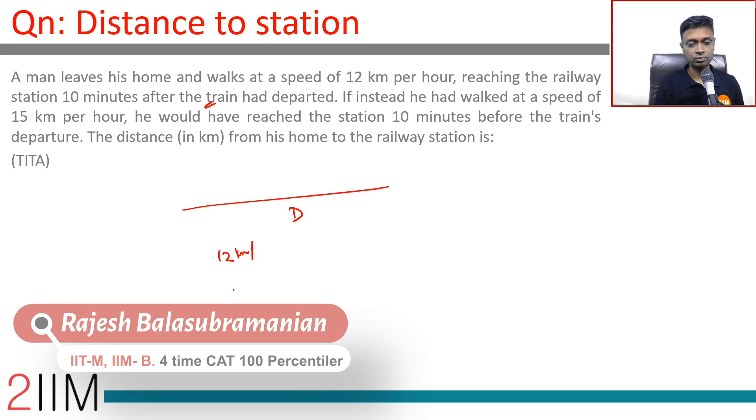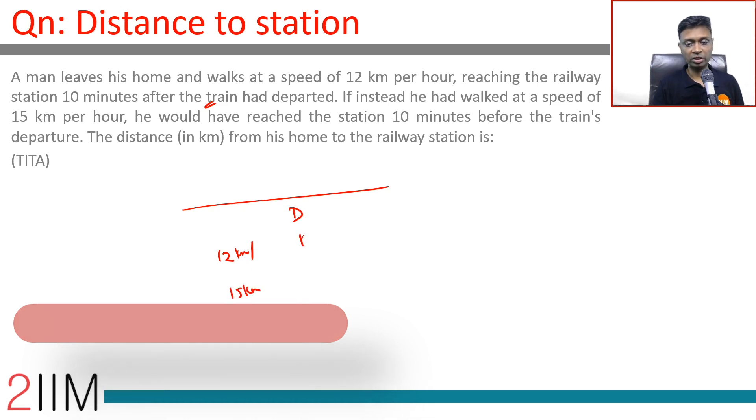In this he takes t plus 10, this he takes t minus 10 minutes. Or I'm going to do this very differently. Time taken in this instance is d by 12. This distance is d by 15. D by 12 minus d by 15 is 1 by 3. Wonderful direct way of doing this without worrying about the time t.